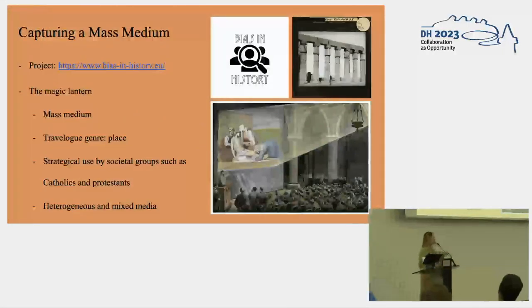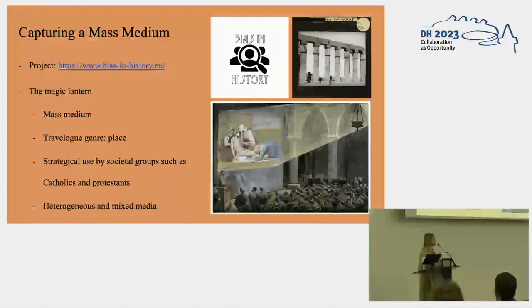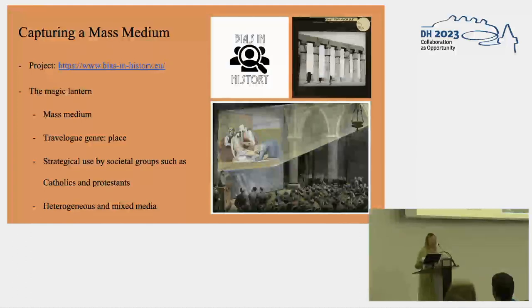I'm working on the Bias in History project, which looks at historical bias in different historical source corpora. I'm working on magic lantern slides, but my two colleagues are working on illustrated children's literature and police reports, and we try to study biases in these corpora and learn more about life in the 19th and 20th centuries. The magic lantern was already invented in the mid-17th century, but through technological innovations it became a true mass medium in the 19th century, popular all over the Western world and even in Asia and other continents.